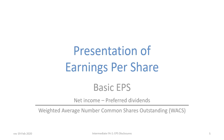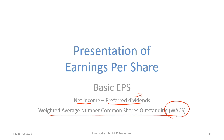Basic EPS is calculated as net income minus preferred dividends, divided by the weighted average number of common shares. The deduction of preferred dividends will depend if the preferred shares are cumulative or non-cumulative. Since you are exposed to EPS presentation at this level, it's important that you have a basic understanding of how to calculate it.